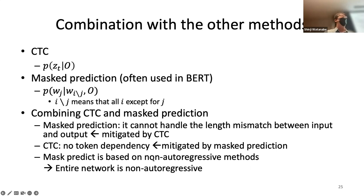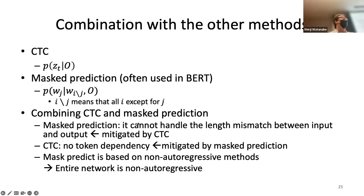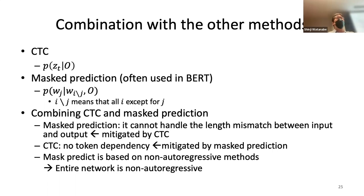This sounds similar to CTC-attention combination, but there is another unique characteristic of mask-based approaches: it is not autoregressive. We don't have to wait for previous tokens to be estimated — it can be parallelized across the entire token sequence. Mask predict is a non-autoregressive model, and CTC is also non-autoregressive. So combining two non-autoregressive models is itself non-autoregressive — Mask CTC is also non-autoregressive, which ensures no latency from autoregressive decoding.